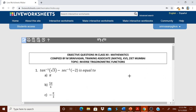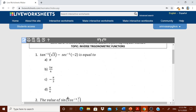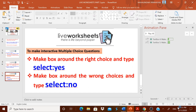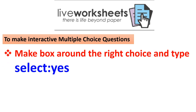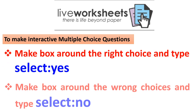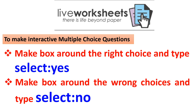Now here is what you do next. Out of the four choices, you know which is correct and which is wrong. To make the interactive multiple-choice question: make a box around the right choice and type 'select:yes', and make a box around the wrong choices and type 'select:no'. It is very simple. For one question you will typically type one 'select:yes' and three 'select:no'.